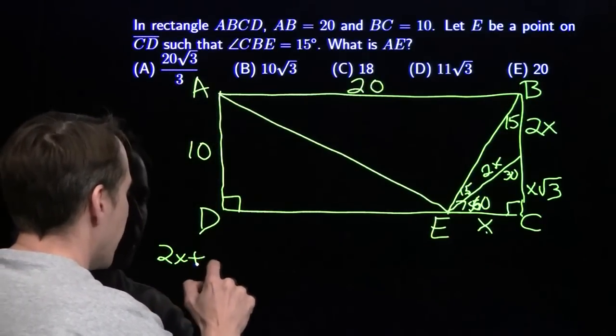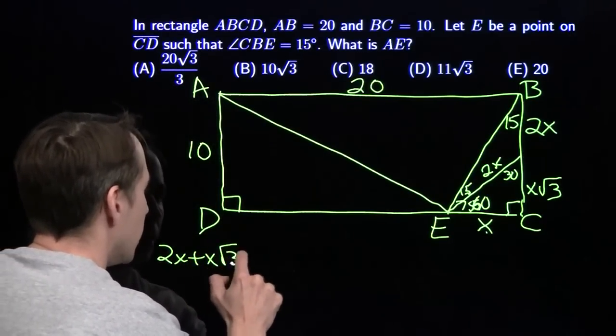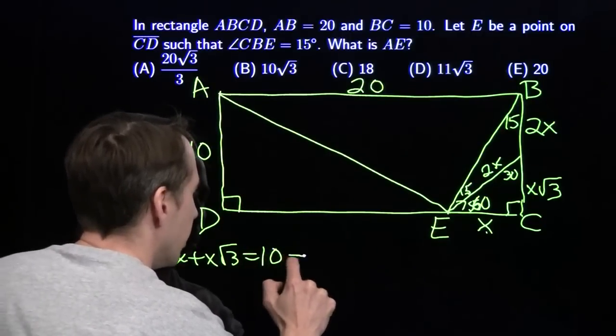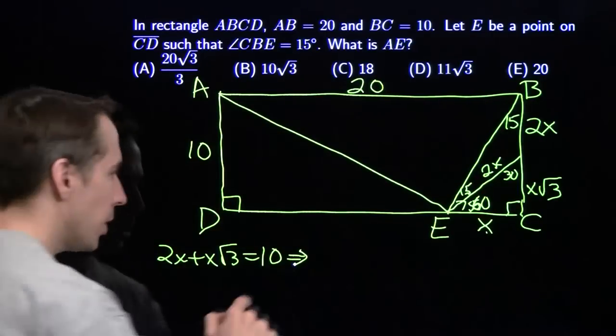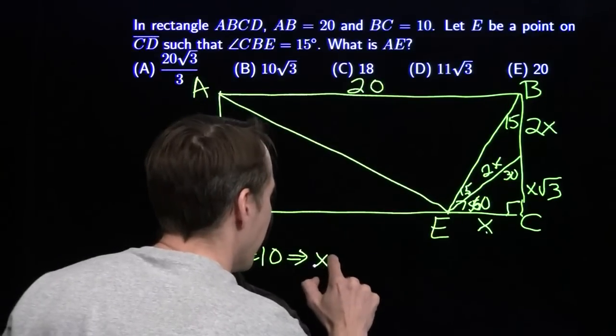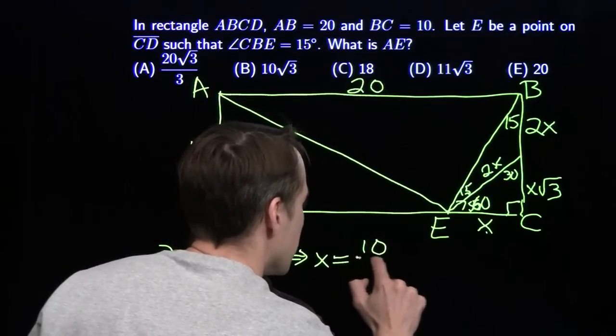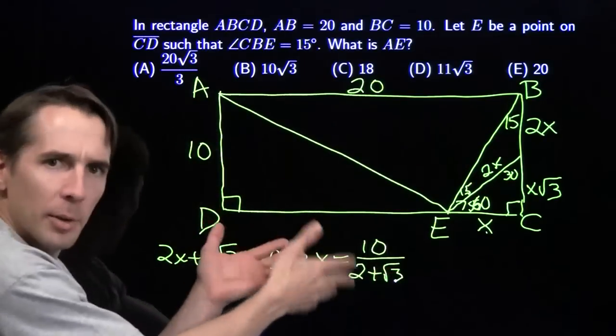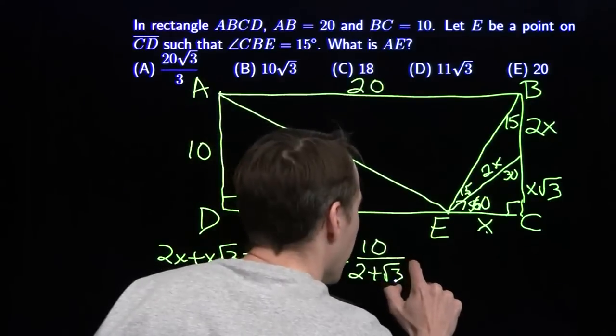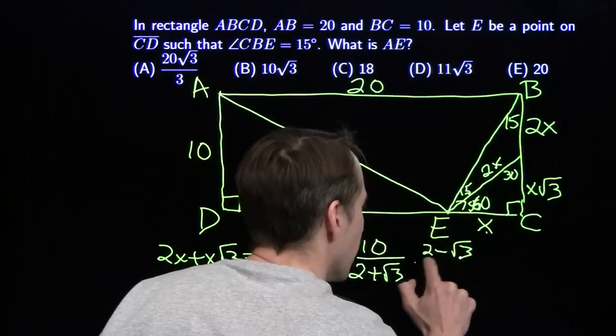Start off with 2x plus x root 3 equals 10. Now we're just going to factor out the x. This is x times the sum 2 plus the square root of 3. We'll just divide by that. It's 10 divided by 2 plus the square root of 3. And we can clean up this mess by multiplying top and bottom by 2 minus root 3.